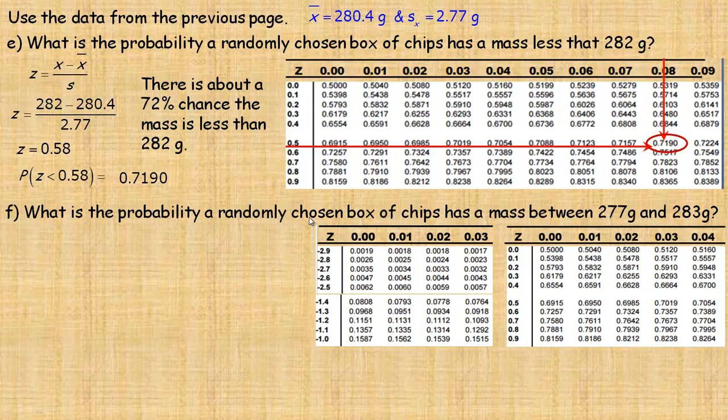And F here asks, what's the probability a randomly chosen box of chips has a mass between 277 and 283? So we need to find the z-scores for both of them. So let's do the 277 first.